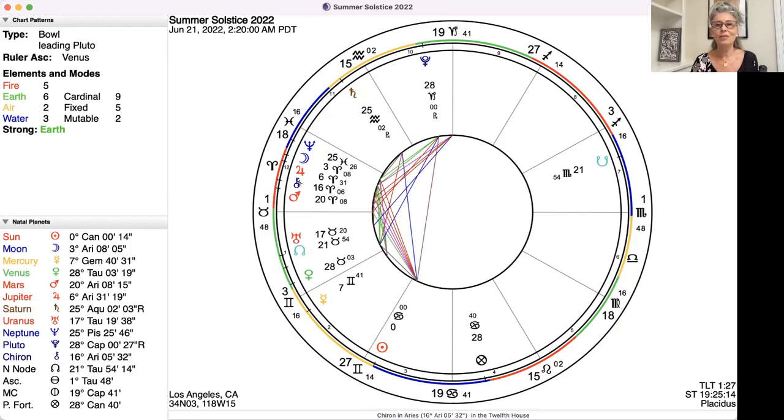So I think this is a very, very important theme. The other thing that is really important, as you can see, Uranus is heading towards a conjunction with the North Node in Taurus.